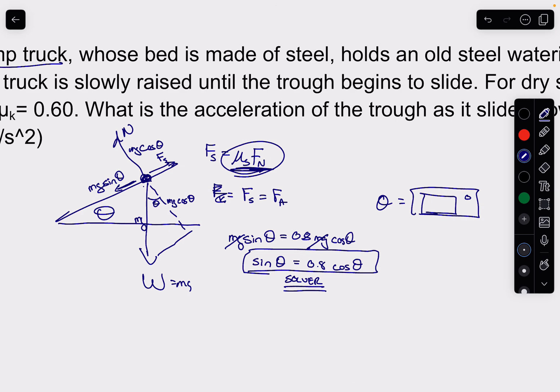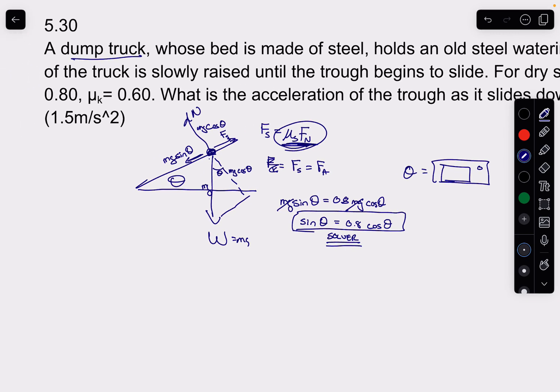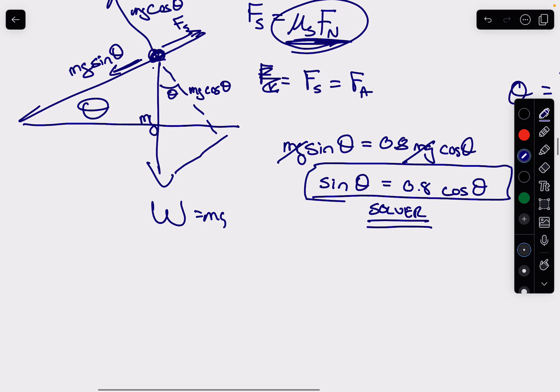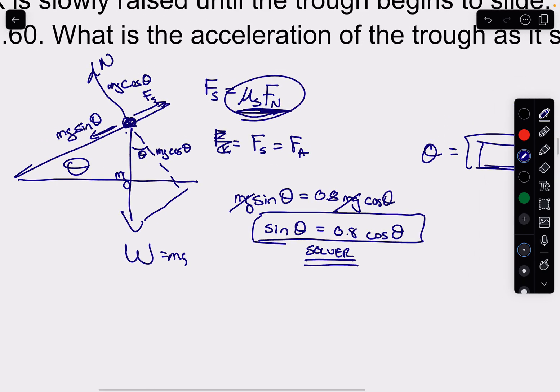So the next question is, what is the acceleration of the trough as it slides down? So when you're trying to figure out what the acceleration is, let's think back down to our picture here. It's being pushed down by this. But at this point, once it starts to move, the only thing that's holding it back now is kinetic friction.